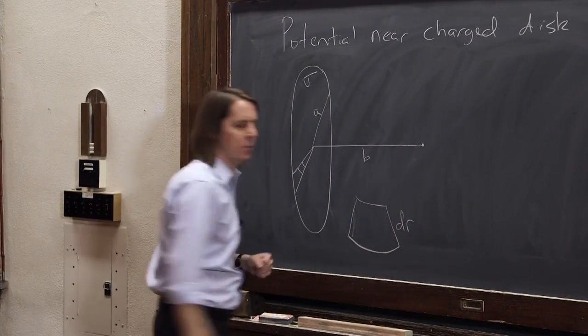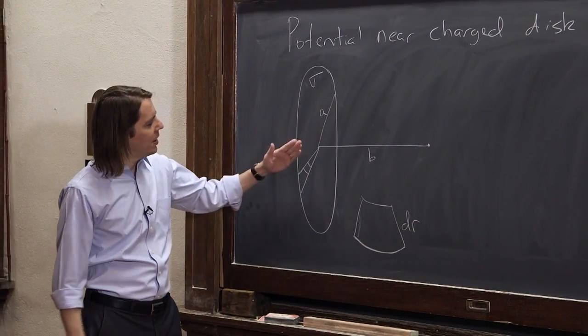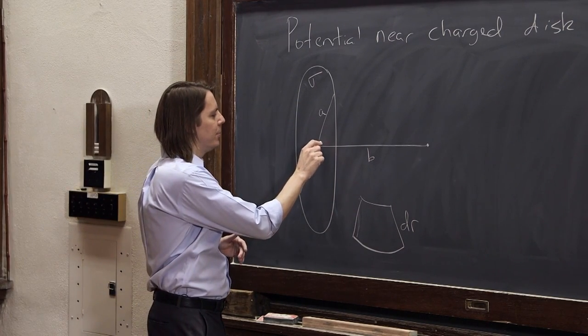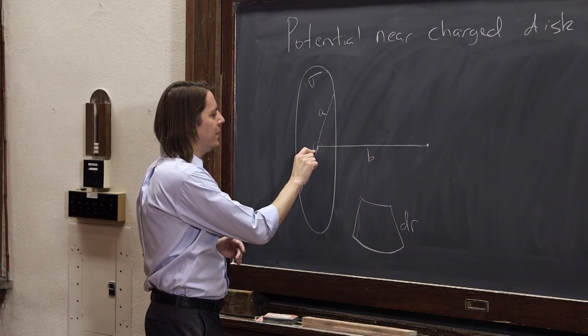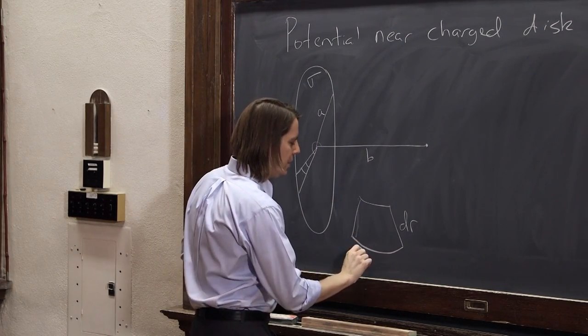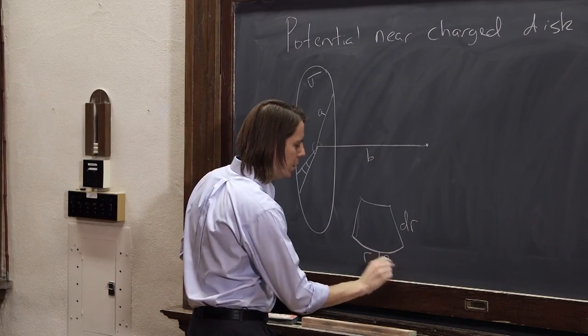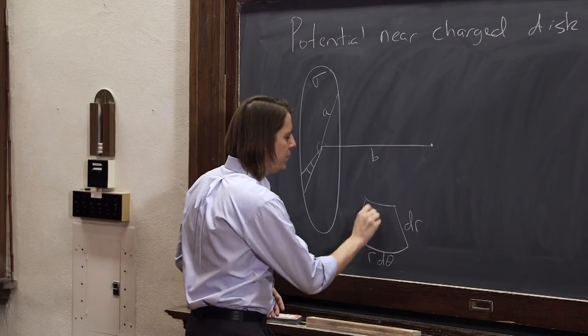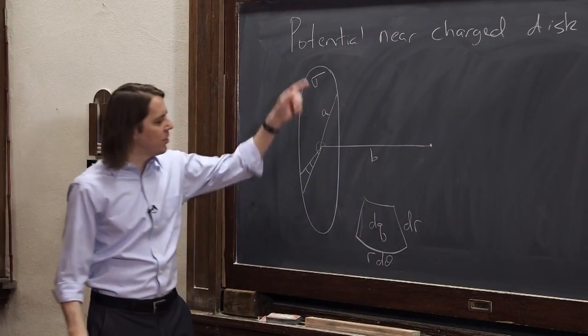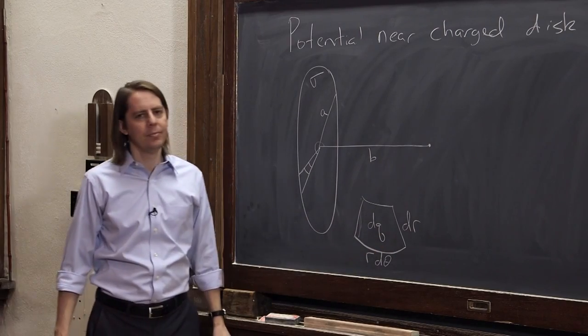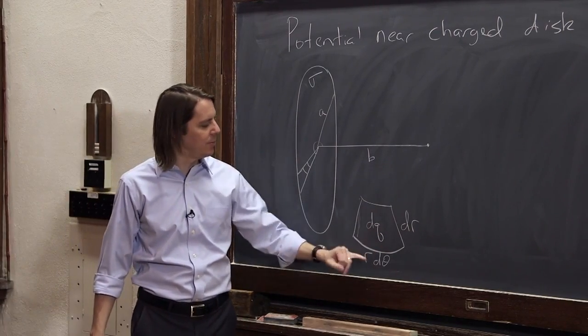So it's got dr this way. But then to make it, I also had to move around theta. We're doing this in polar coordinates. So you come around here to theta, and then you go to theta plus d theta. So this little distance here is r d theta.